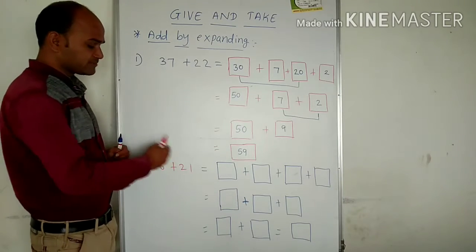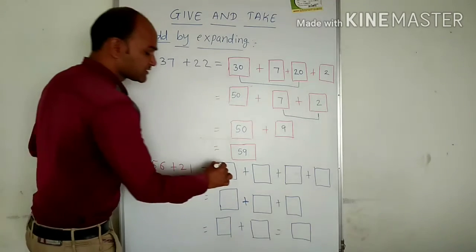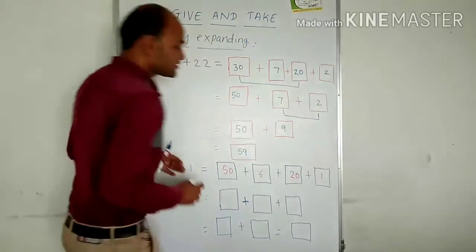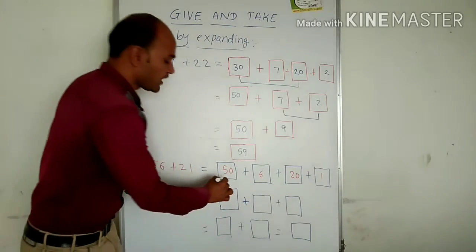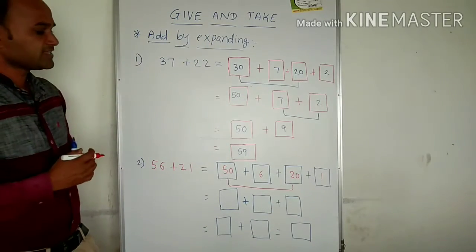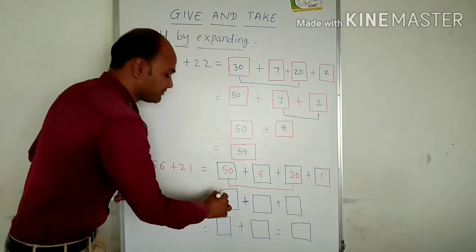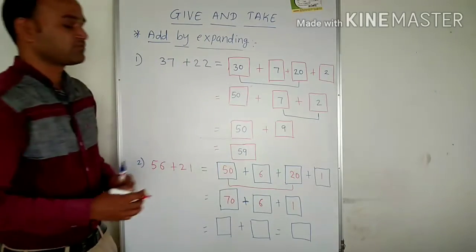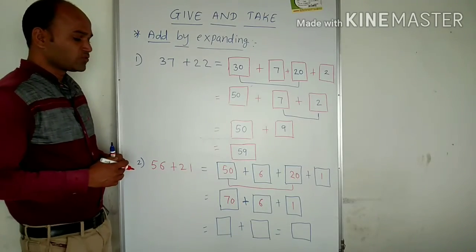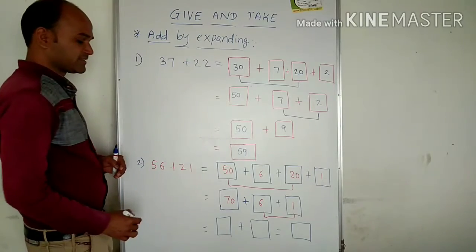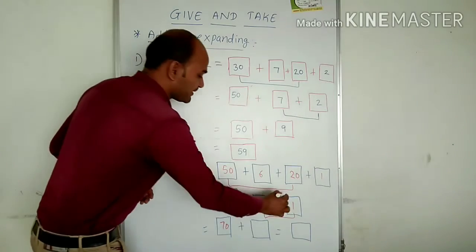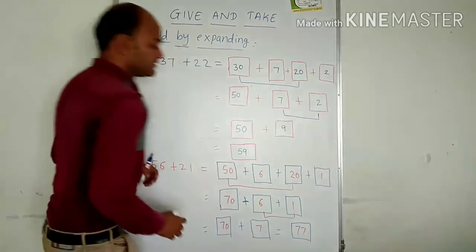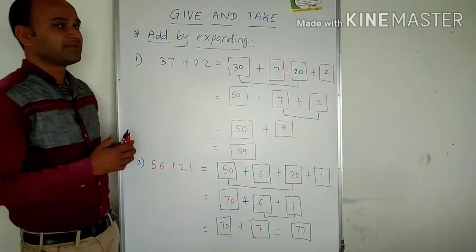Let us look at one more example: 56 plus 21. 56 is expanded into 50 plus 6, and 21 is expanded into 20 plus 1. Next, we add the tens place first: 50 plus 20 equals 70. We write the ones place digits as usual — 6 and 1. Then we add the ones: 6 plus 1 equals 7. So 70 plus 7 gives us the answer 77. In this way we add numbers by expanding them.